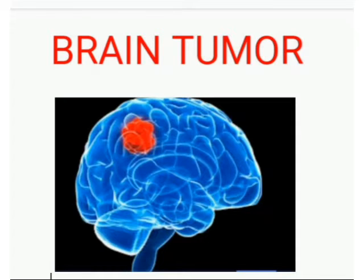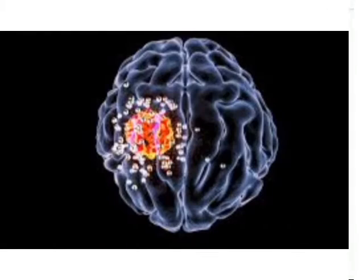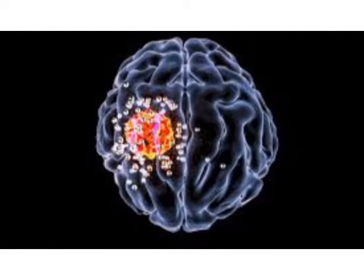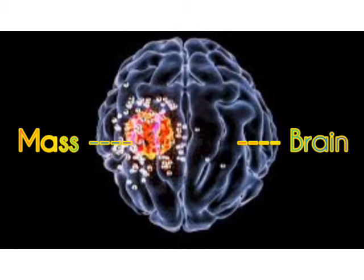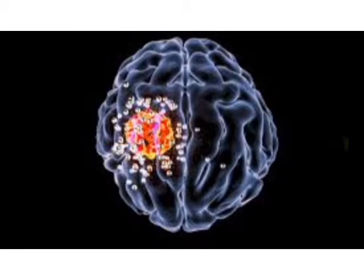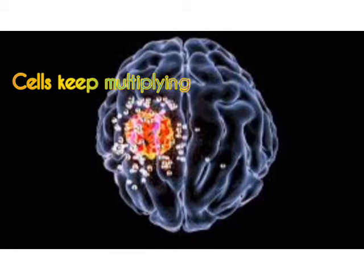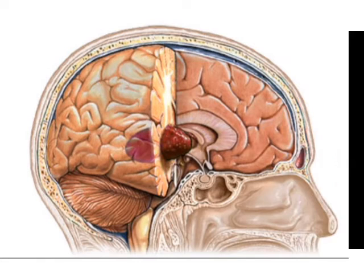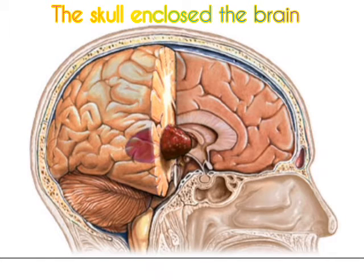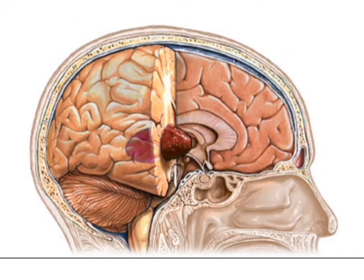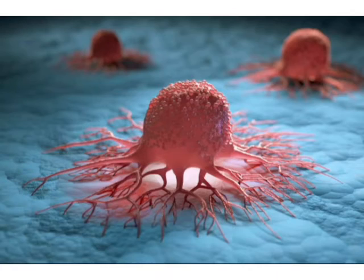A brain tumor is a mass or a collection of abnormal cells in the brain that grows out of control. Your brain is enclosed by the skull, and any growth inside this space can cause problems. It can cause pressure inside the skull, whether it is a benign or a malignant tumor.